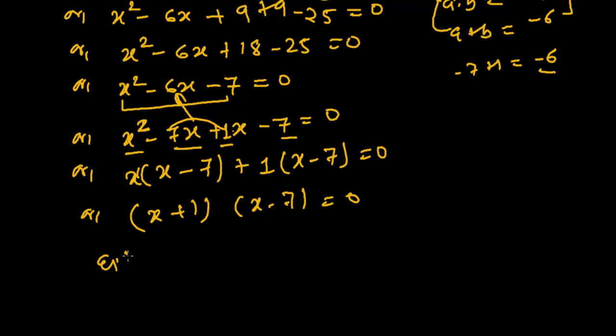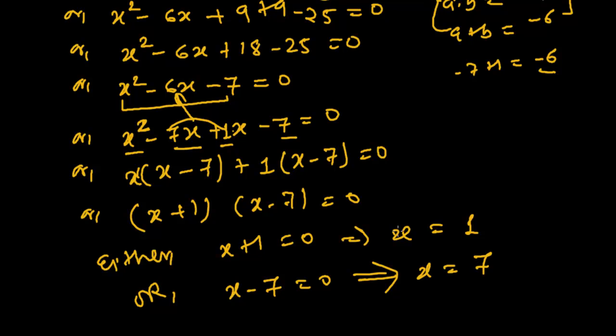So, either x + 1 = 0. Therefore, x = -1. Or, x - 7 = 0. Therefore, x = 7. Answer.